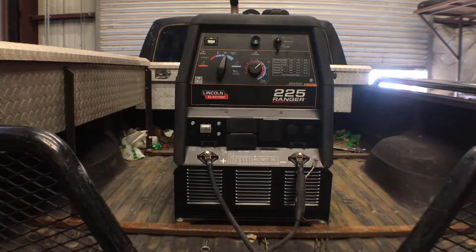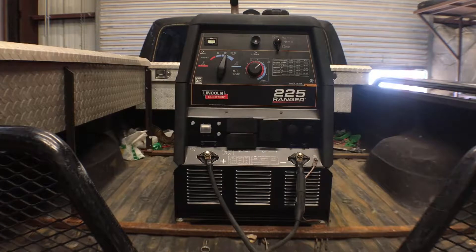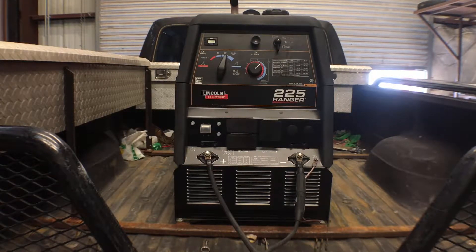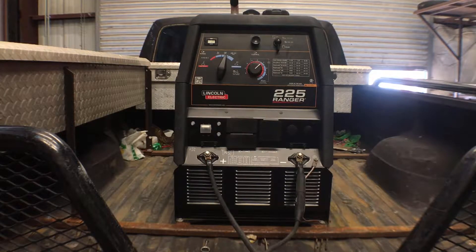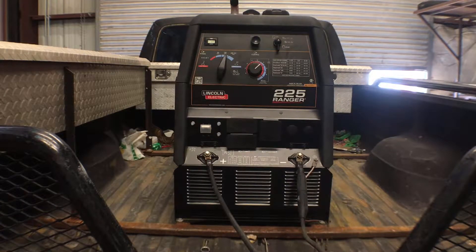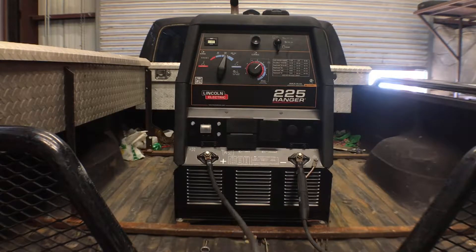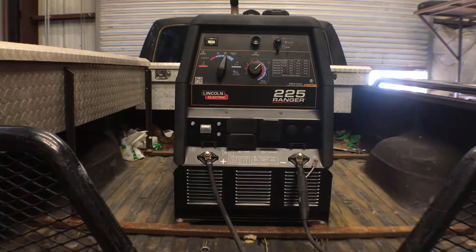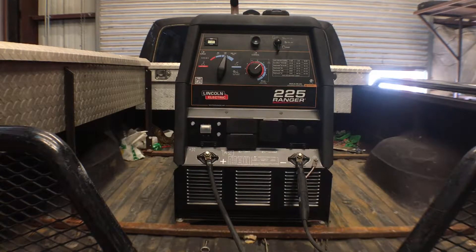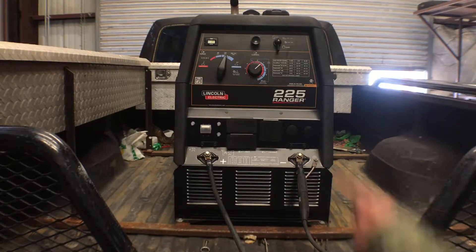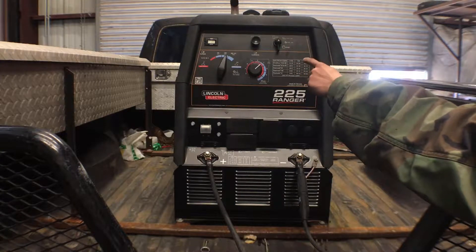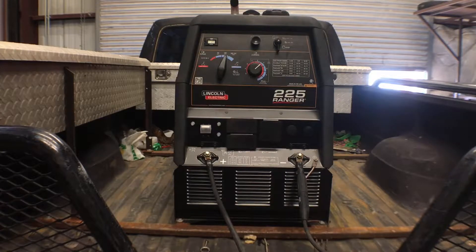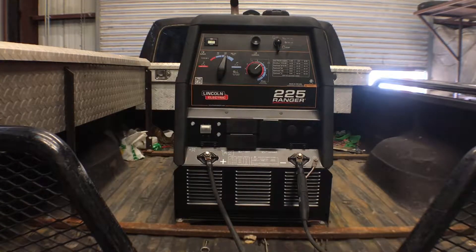This here is the welder I'll be using in this video. It's a Lincoln Electric Ranger 225 engine driven welder. Now I've got this thing set up in its TIG mode with the stinger an electrode negative and the ground an electrode positive. I've got it set at roughly 125 amps. As you can see I'm in the second tap setting and I'm at seven right there which is somewhere in the range of 125 to maybe 130.